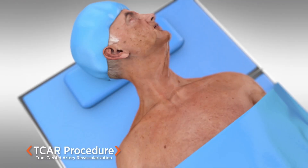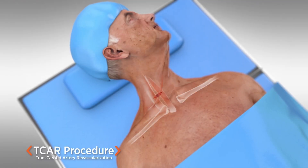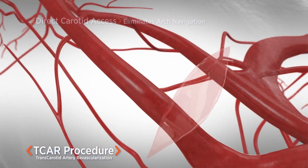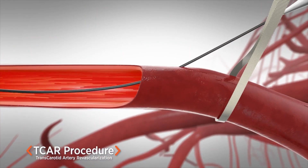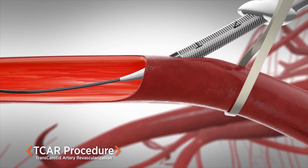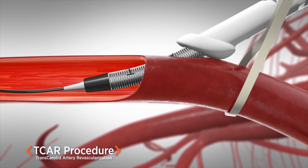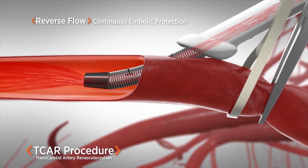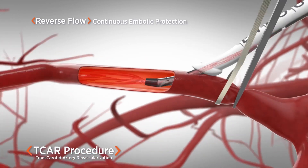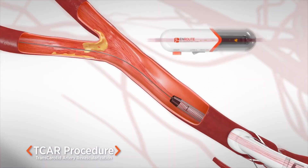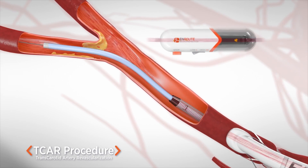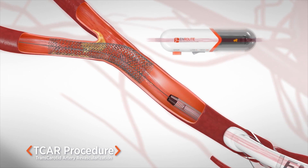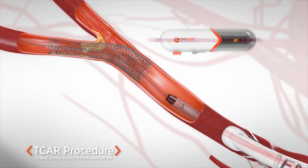The TCAR procedure is done under general anesthesia. The artery in the neck is accessed through a small one or two centimeter incision at the base of the neck. We then directly cannulate the artery — place a catheter inside the artery itself — and establish reverse flow in that vessel, which allows us to prevent any risk of blood clots going to the brain and causing strokes during the procedure. Once we establish the reverse flow, we can place a wire across the blocked segment and stent it, just like we would with a standard carotid artery stenting.